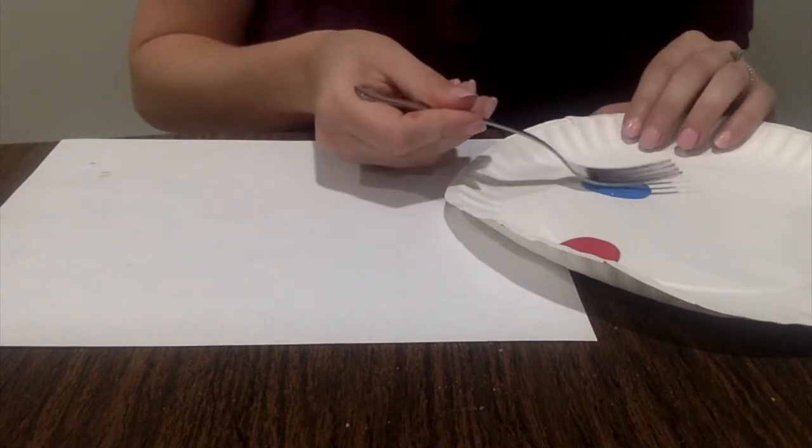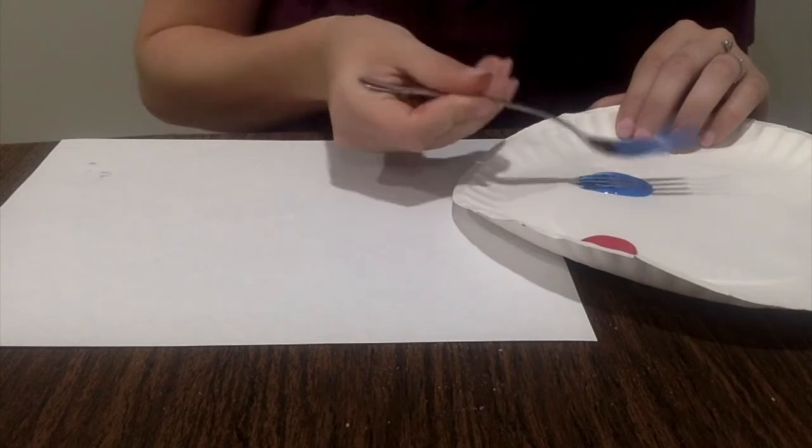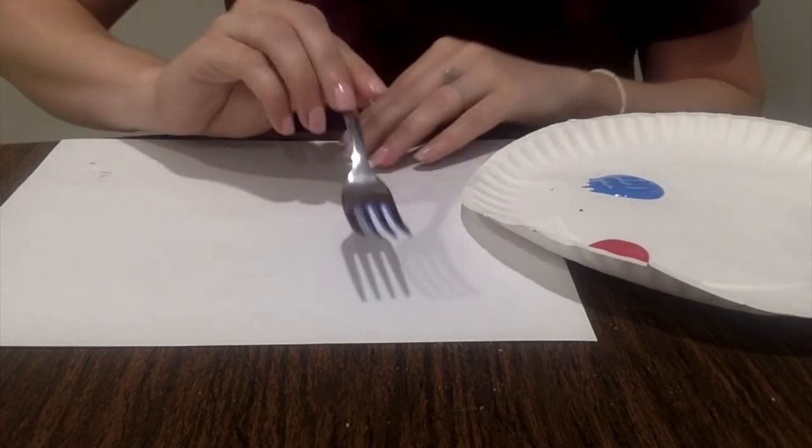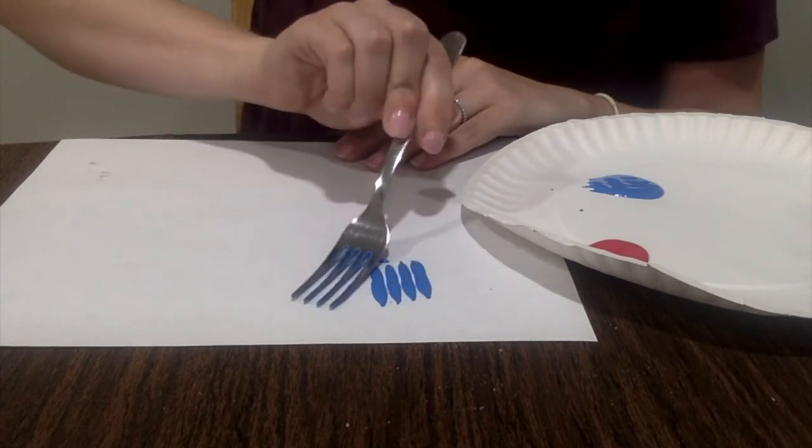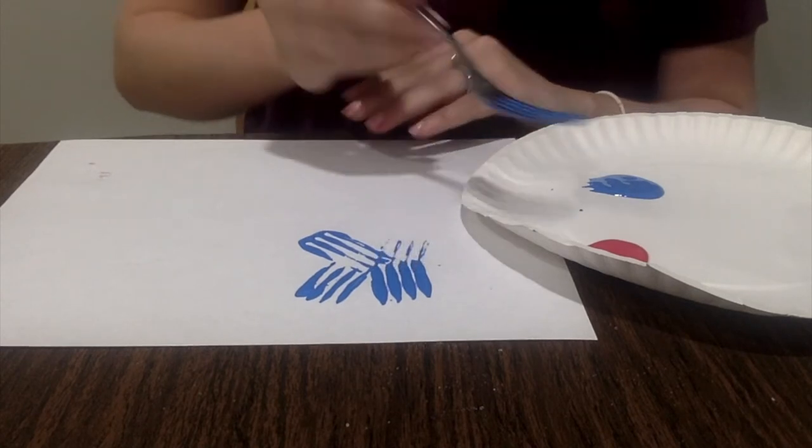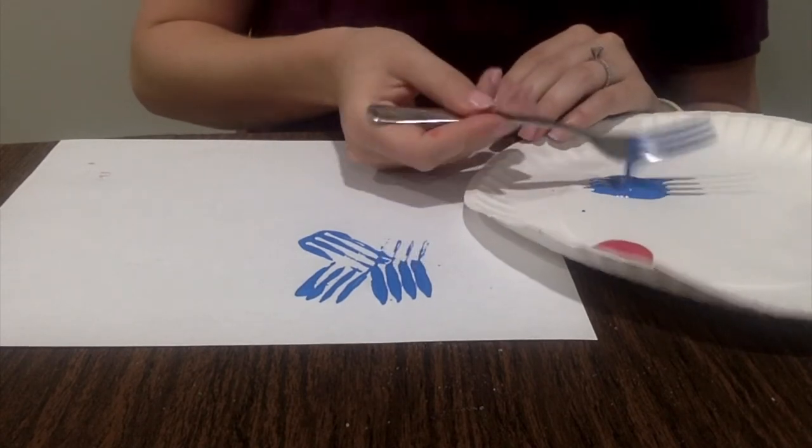So what we're going to do is we're going to dip our fork into our paint and try to get it all covered. And then we're just going to push and create some splats on our paper. And they're going to look like little firework explosions.